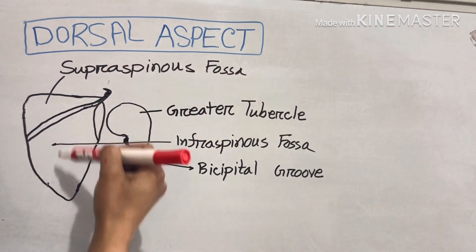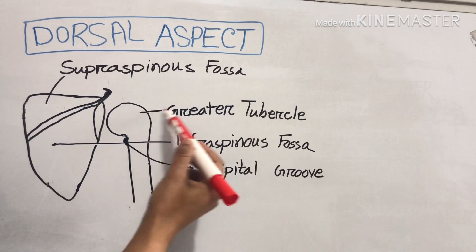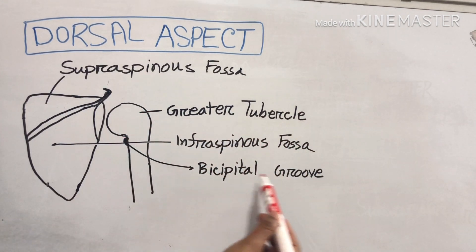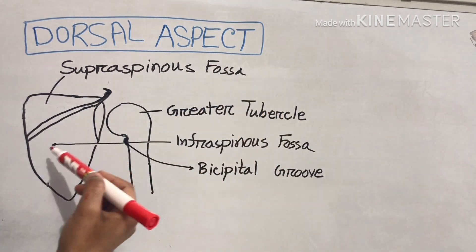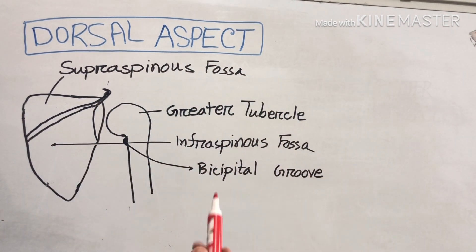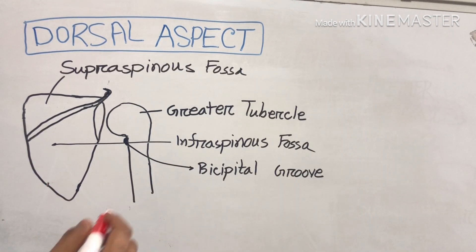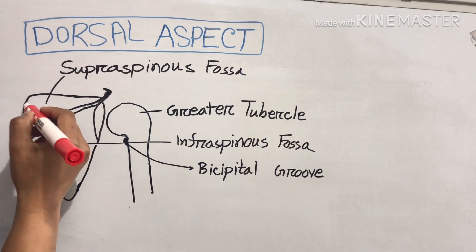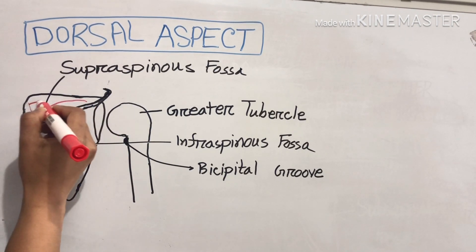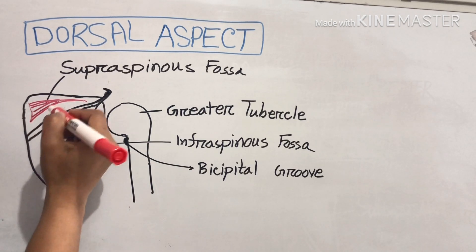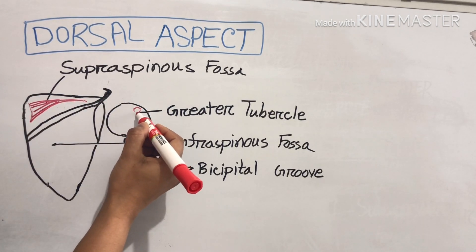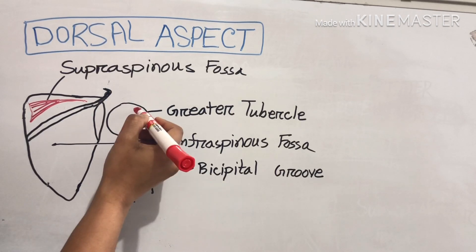I will make a diagram and show you the origin, insertion, nerve supply, and actions of all these muscles. This is our scapula — dorsal aspect of scapula. This is the humerus, this is the greater tubercle of humerus, this is the bicipital groove of humerus, supraspinous fossa of scapula, and infraspinous fossa of the scapula. The supraspinatus muscle originates from the medial two-thirds of the supraspinous fossa and is inserted into the upper impression of the greater tubercle of the humerus.